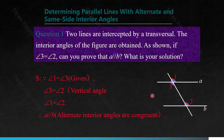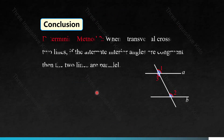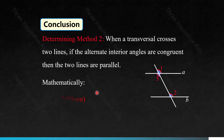Determining parallel lines with alternate and same-side interior angles. Two lines are intercepted by a transversal, and interior angles are obtained. If angle 3 is equal to angle 2, can you prove that line a is parallel to line b? We start with our given: angle 1 equals angle 3. We also know angle 3 equals angle 2 because vertical angles are congruent. Therefore, a is parallel to b because alternate interior angles are congruent. Conclusion: when a transversal crosses two lines and the alternate interior angles are congruent, the two lines are parallel.